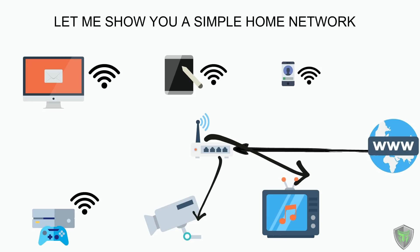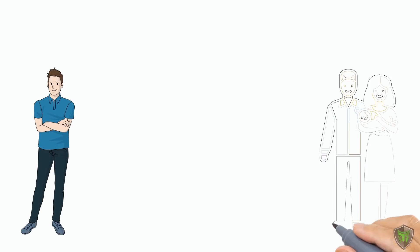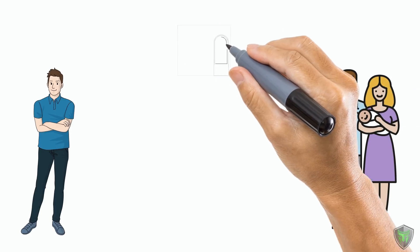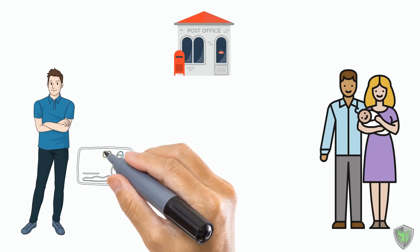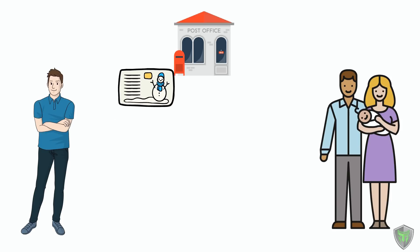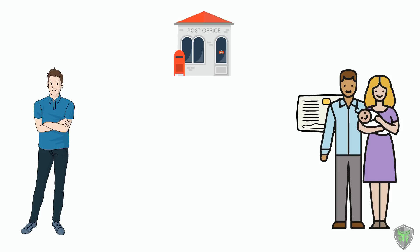For the communication between the devices to be made possible, we need to know the address of the device to which we are communicating with. You want to send a holiday postcard to your cousins or friends, you got to know their address to send it to. You will write the address and send it to the post office, which will then forward it to the correct address. It's the case here also. Every device connected to the router will have one address assigned to it so that the other devices can communicate with them. That address is called the IP address.